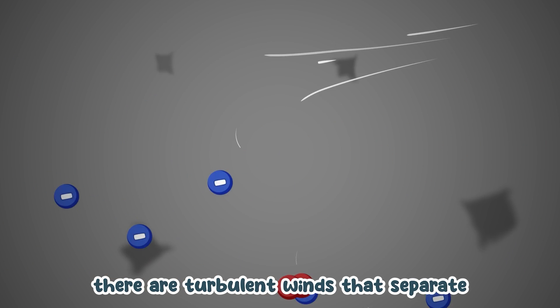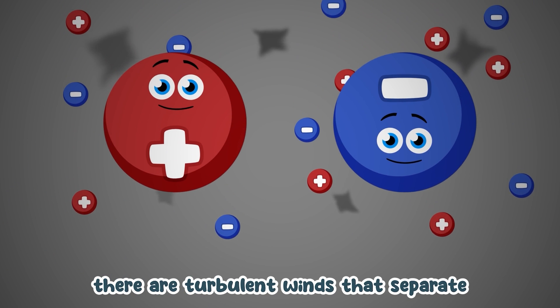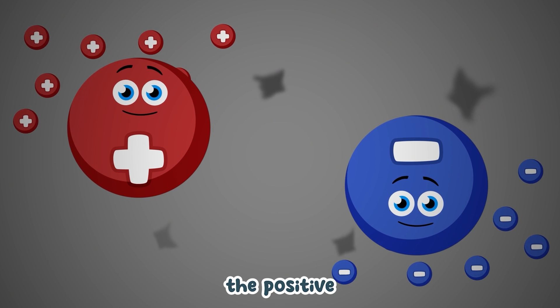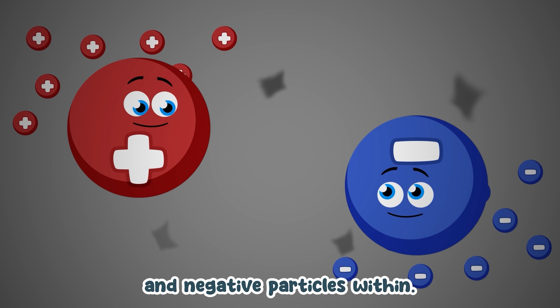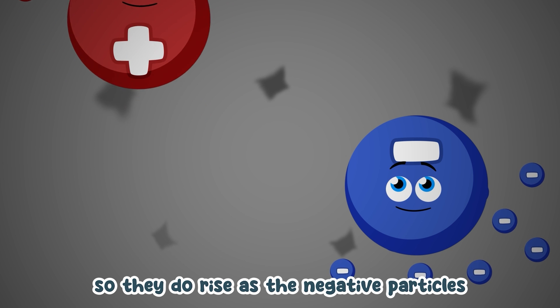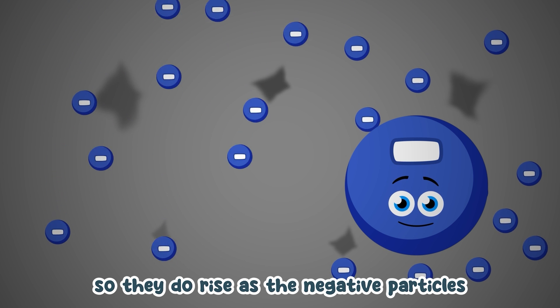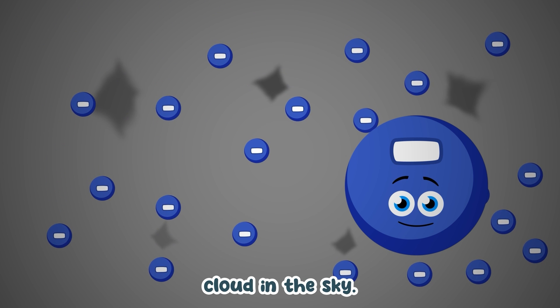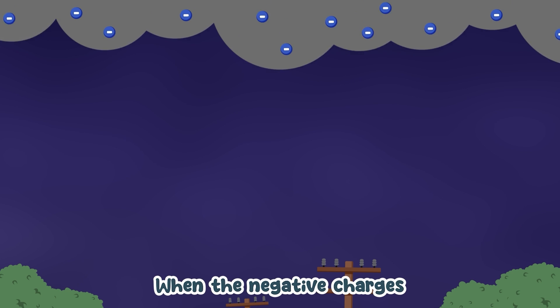Let's see how a flash of lightning is created with such might. Within a storm cloud there are turbulent winds that separate the positive and negative particles within. Positive particles are lighter, so they do rise, as the negative particles make up most of the storm cloud in the sky.